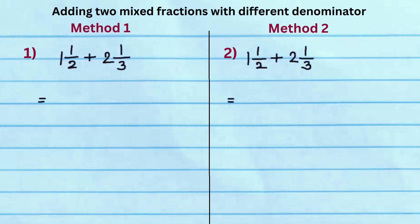Mixed fraction addition with unlike denominators can be solved using two different methods. The denominators are different, so we have to find the least common multiple of the denominators first.